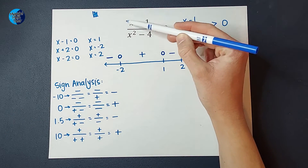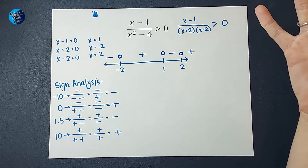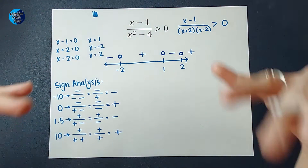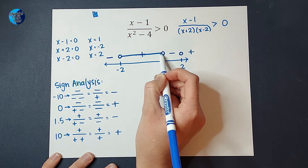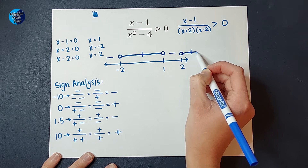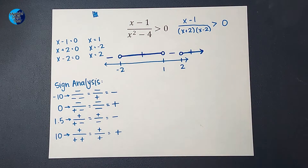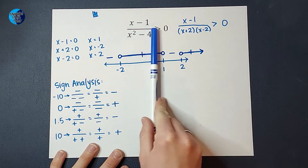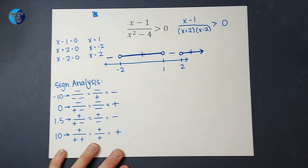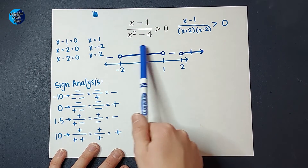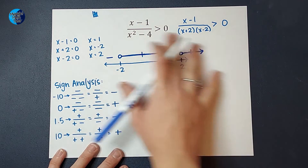We want to know where this is greater than zero. What is greater than zero? Positive numbers. So I want to know where this is positive, which I already figured out. It's positive between negative two and one, and to the right of two. That is where this expression is positive. If I pick any number between negative two and one, or any number bigger than two, and plug it in for x, I will get a result that makes this statement true — greater than zero. So this is my answer.